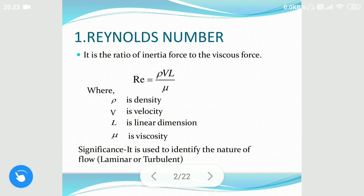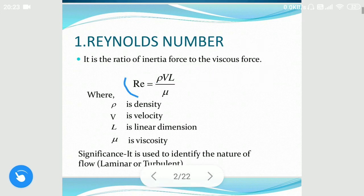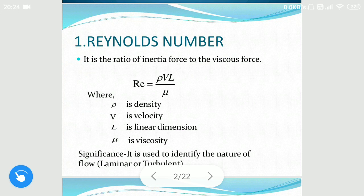The first one is Reynolds number. Reynolds number is a ratio of inertial force to the viscous force. It is given by the formula rho·V·d divided by mu, where rho is the density of the fluid, V is the velocity of the fluid — it can be average or mean velocity with units of meter per second — L is the linear dimension or the length of a pipe or cylinder through which the fluid is flowing, and mu is the kinematic viscosity.